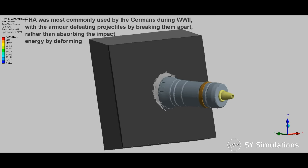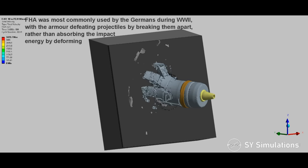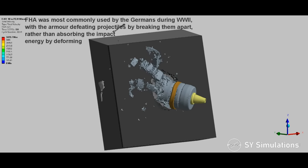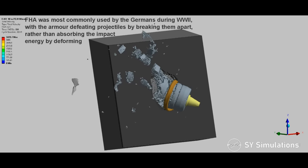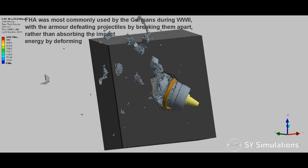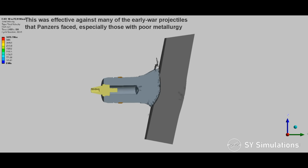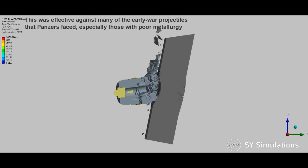Face-hardened armor was most commonly used by the Germans during World War II, with the armor defeating projectiles by breaking them apart, rather than absorbing the impact energy by deforming. This was effective against many of the early war projectiles that panzers faced, especially those with poor metallurgy.